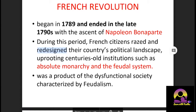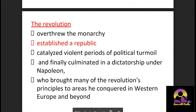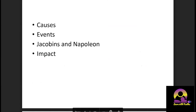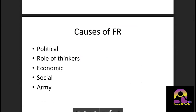The French Revolution started in 1789 and entered a new phase with the ascent of Napoleon Bonaparte. The revolution first overthrew absolute monarchy, then brought about constitutional monarchy, then abolished that too, and finally established a republic. With respect to causes, we'll see political causes, the role of thinkers, economic causes, social causes, and the role of the army.